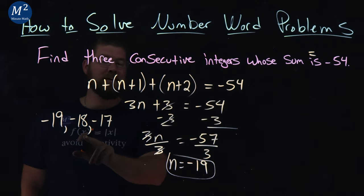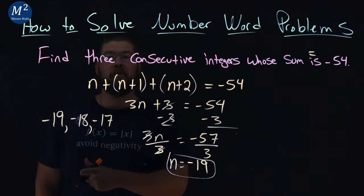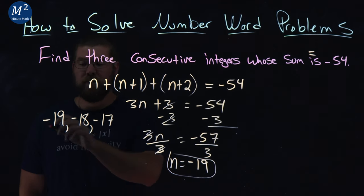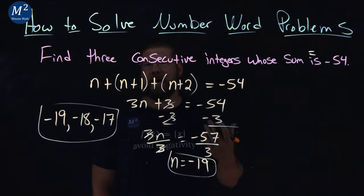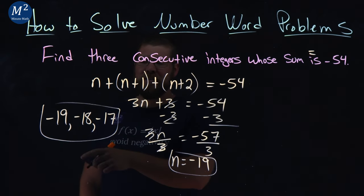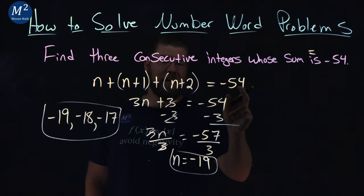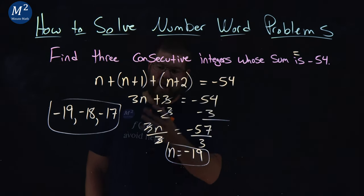Then add one to that - we have negative 17. Be careful: a lot of times students will go to negative 20 and negative 21. But with consecutive integers, we're adding one to it. So we have three integers here. We can double-check: negative 19 plus negative 18 plus negative 17 does equal negative 54. There we have it.